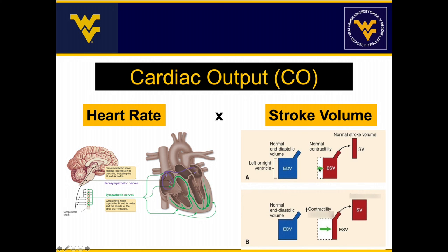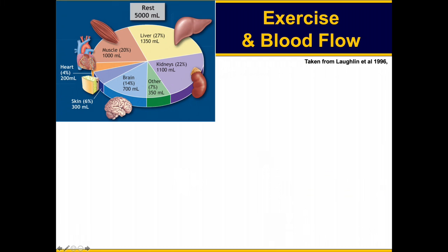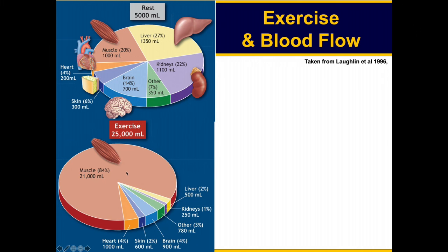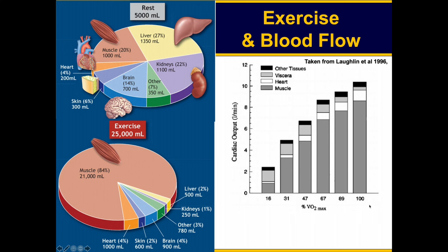Stroke volume changes with exercise. During high-intensity exercise, increased heart contraction means more blood leaves the heart, so the end systolic volume decreases, resulting in a larger stroke volume. This is another way of increasing cardiac output — by increasing stroke volume as well as heart rate. At rest, the body's approximately 5,000 milliliters of blood is distributed relatively evenly through the organs. During exercise, about 84% of blood goes to the muscles compared to only 20% at rest. As exercise intensity increases, the proportion of cardiac output directed to the muscles increases drastically, so we must increase both heart rate and stroke volume to accommodate this redistribution.